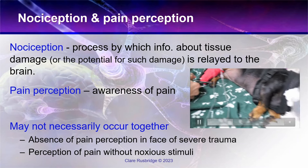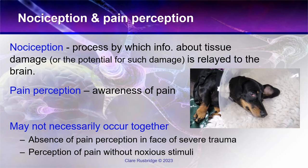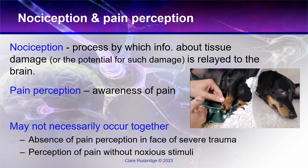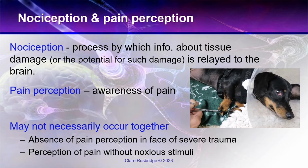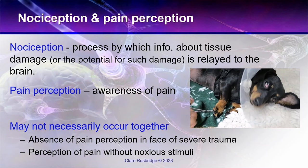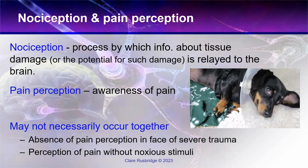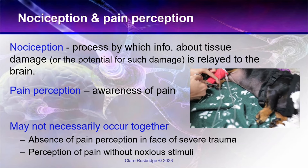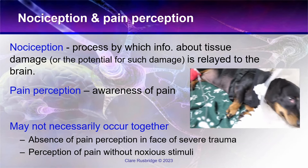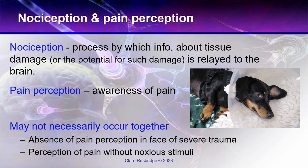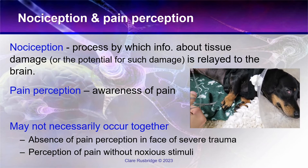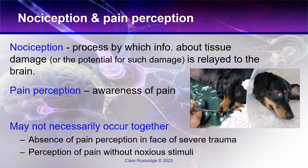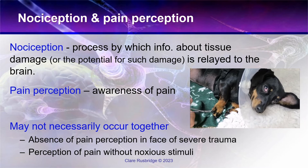This video shows absent pain perception in a Dachshund with very severe intervertebral disc disease. I'm pinching the toenails — in the forelimbs the dog can feel it, turning to look at the painful impulse, but in the back legs there is absolutely no response at all. This dog actually had myelomalacia; the more observant may also notice the dog has breathing difficulty and Horner's syndrome.